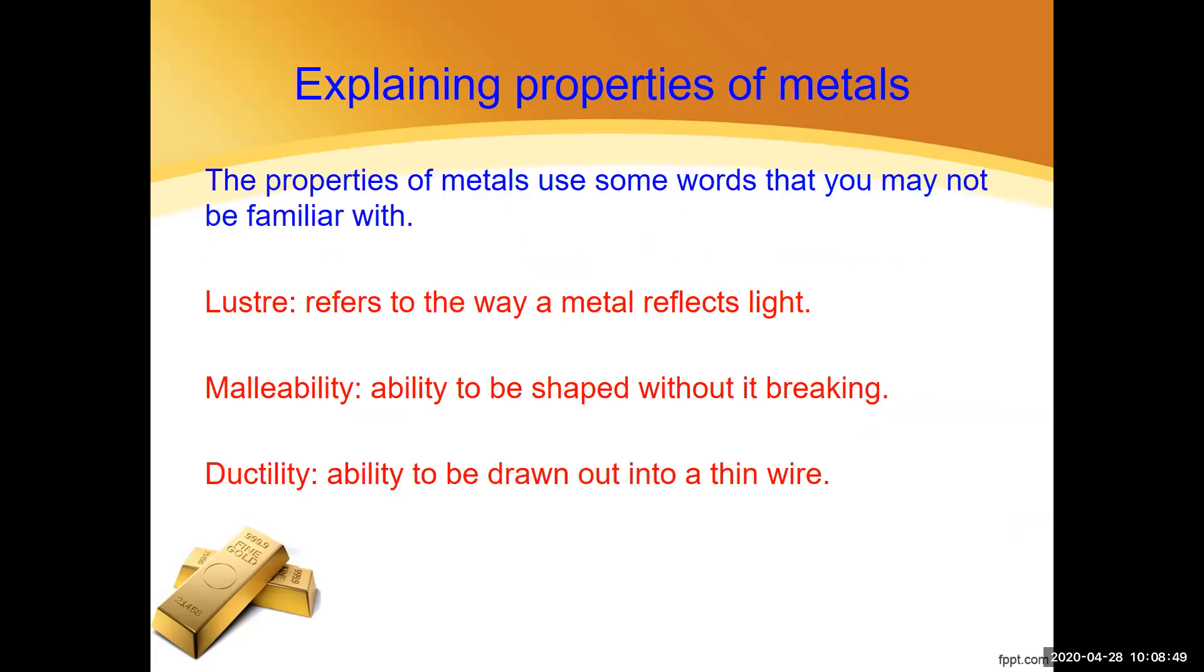How does this model of a metal explain the properties that we observe of metals? First of all, let's go through a few words that you might not be familiar with. Luster refers to the way that the metal reflects the light. Malleability and ductility are very similar properties. Malleability is the ability to be shaped without breaking it. So you can bend a metal without breaking it. And ductility is the ability to be drawn out into a thin wire. So you can roll and roll and roll a metal and draw it out into a thinner and thinner wire. And that's the property we call ductility.